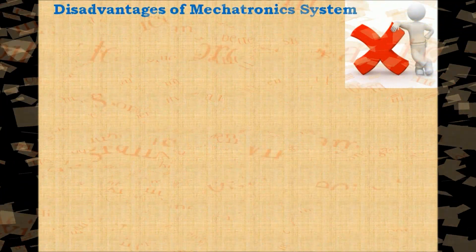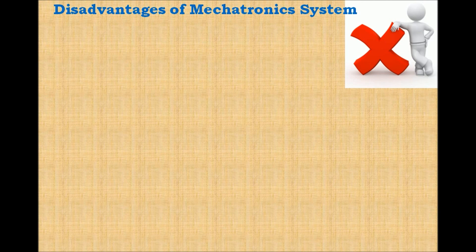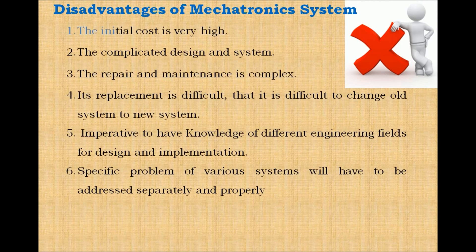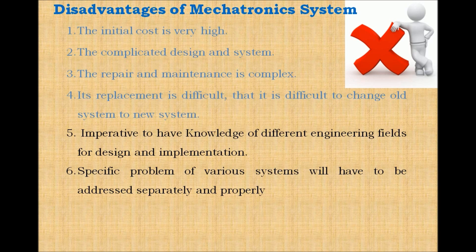Every system has some disadvantages. The disadvantages of mechatronics systems are: the initial cost is very high; the design and system are complicated; repair and maintenance is complex; replacement is difficult, as it is difficult to change an old system to a new system; it is imperative to have knowledge of different engineering fields for design and implementation; and specific problems of various systems will have to be addressed separately.